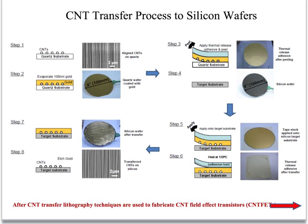The aligned carbon nanotubes are grown on quartz wafers, so we have to transfer them to silicon wafers to make transistors. The first step is to deposit a thick layer of gold — about 100 nanometers — onto the quartz substrate, so that the nanotubes are embedded inside this gold layer. Next, we apply a thermal release tape onto the substrate and peel it off from the quartz wafer. The nanotubes and the gold layer are now embedded in this plastic tape.